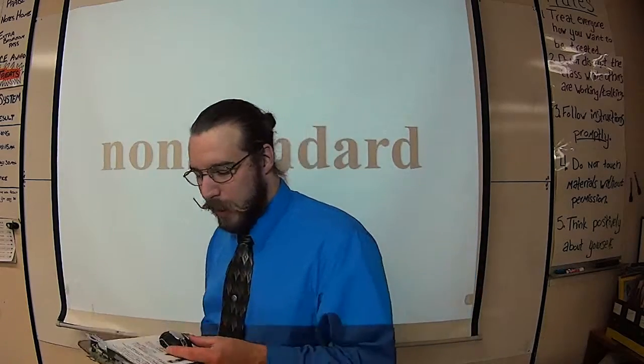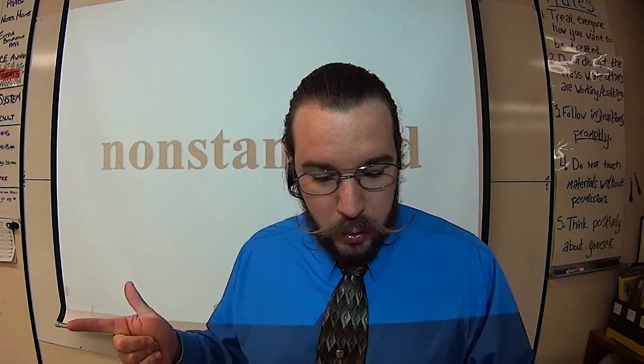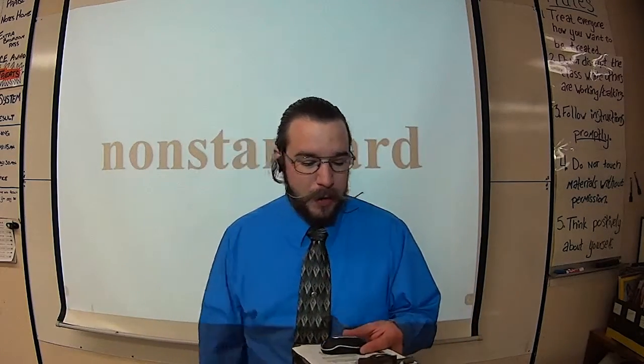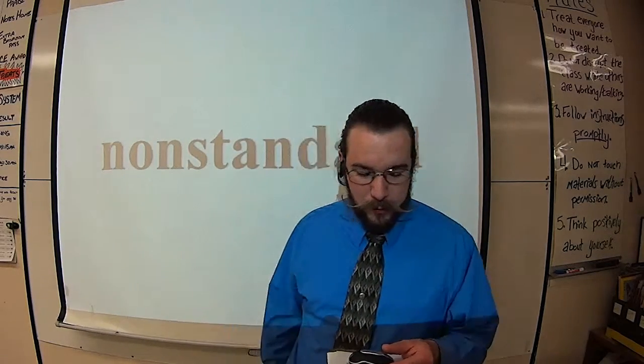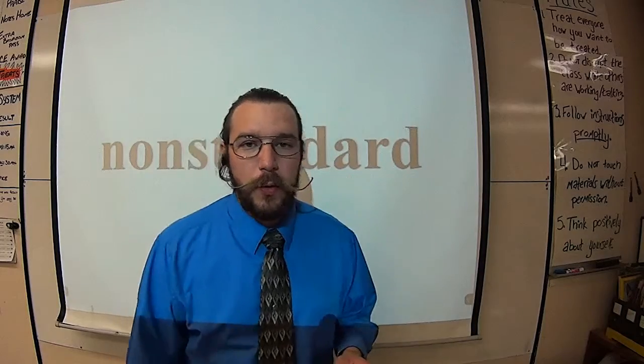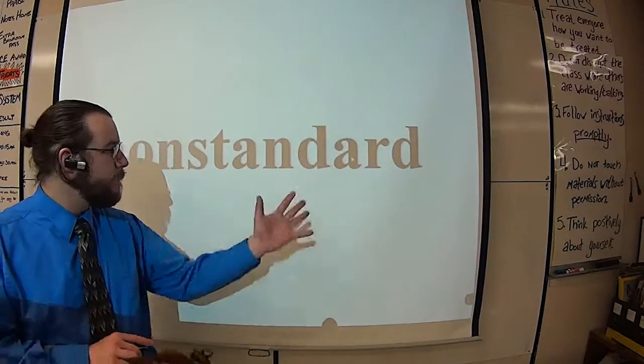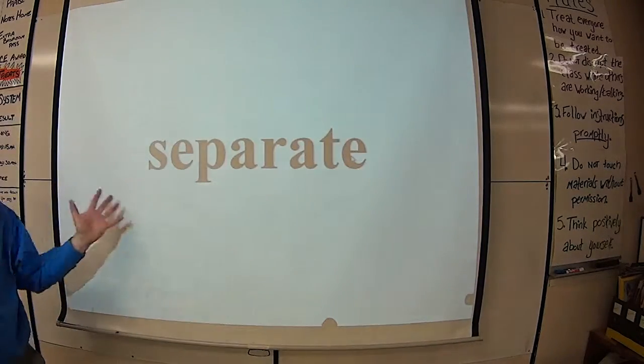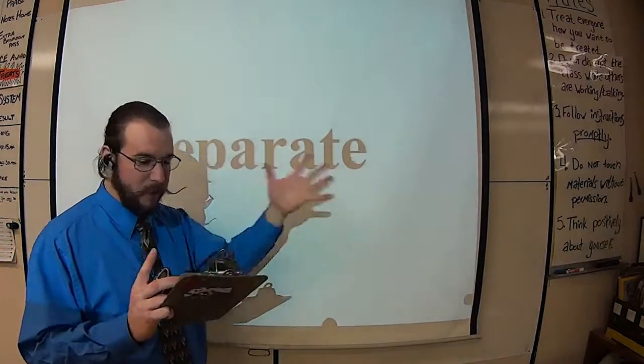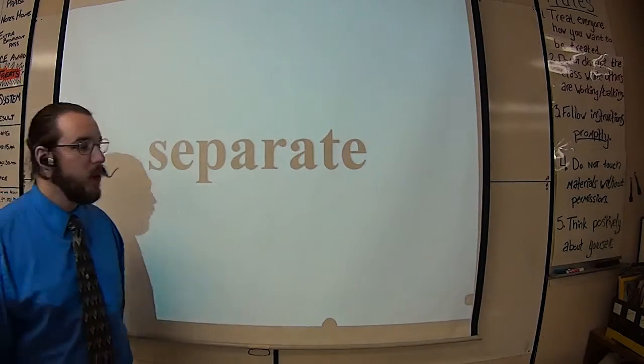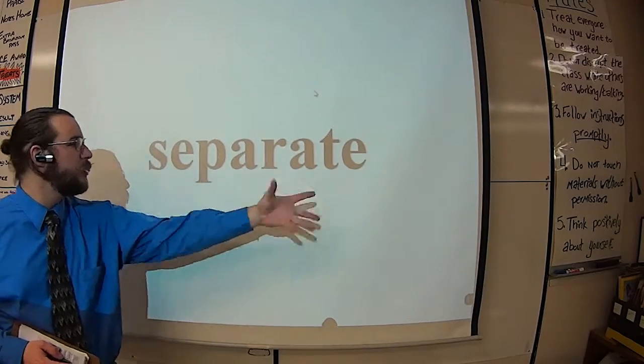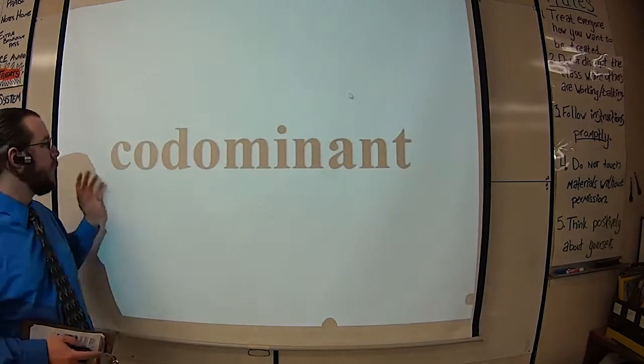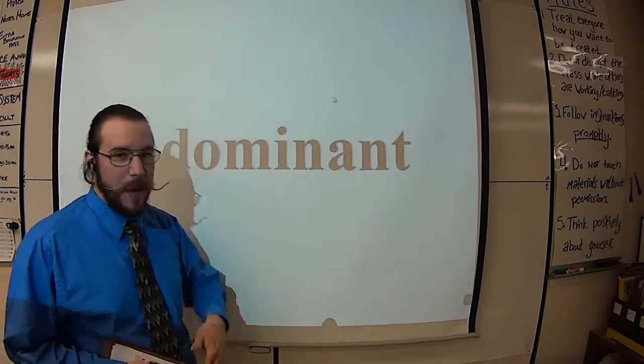Traits are controlled by two dominant alleles. That's right, not just one. These traits, they're especially weird. Traits that are controlled by two separate dominant alleles. Those are called co-dominant. Co-dominant. Like co-captains.